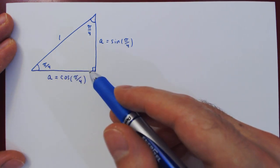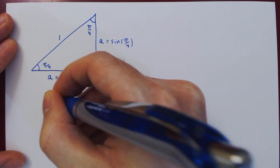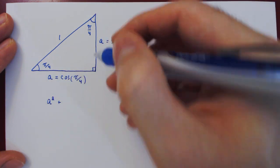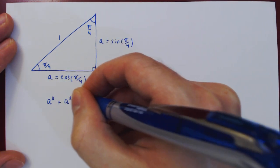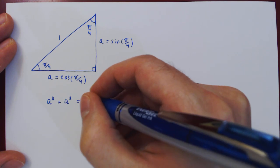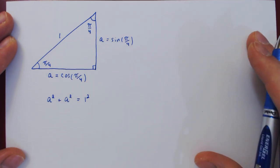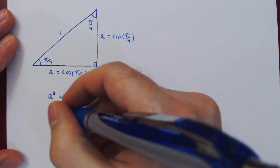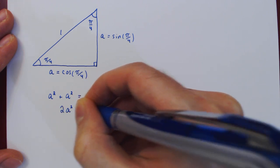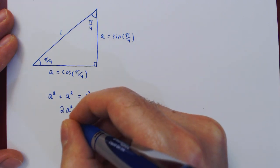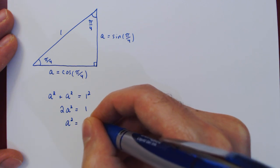The base of a right triangle squared plus the height of the triangle squared is equal to the hypotenuse squared. And now we can simplify and isolate for A. 2A squared equals 1, divide by 2, so A squared is 1 half.